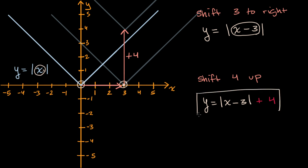But this is what we would finally get. The equation of this graph right over here is y is equal to the absolute value of x minus three, plus four.